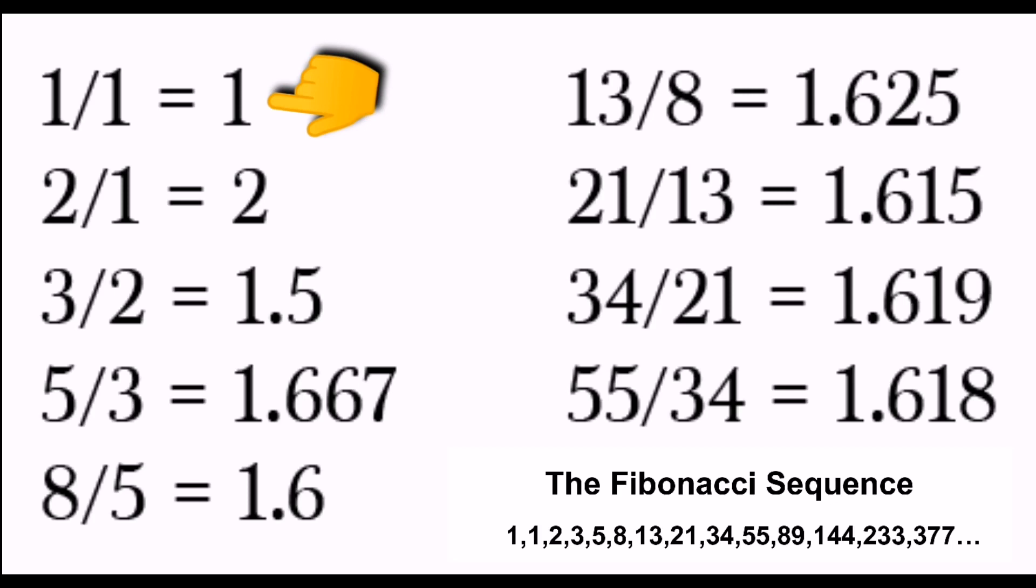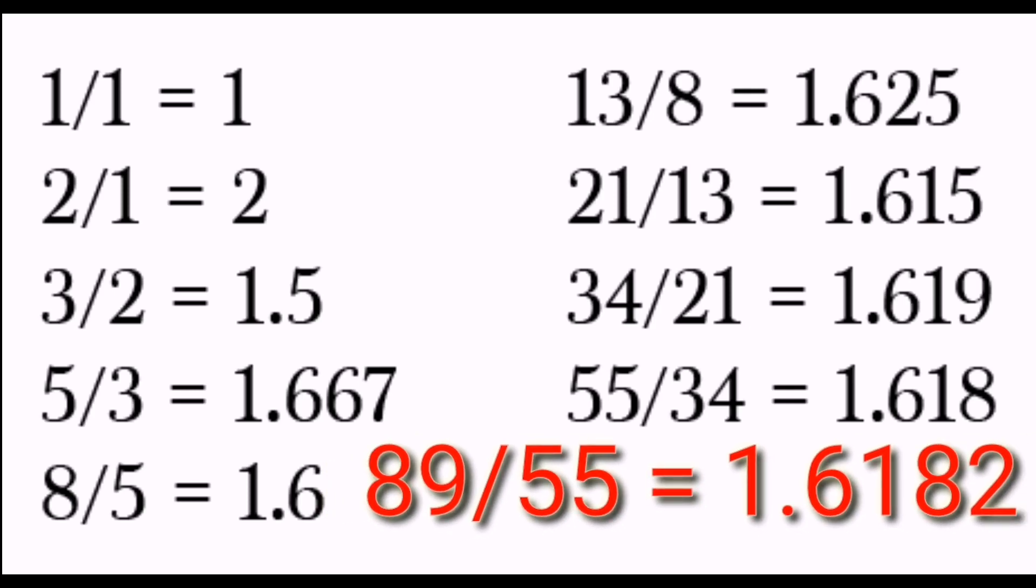For example, 1 divided by 1 is 1, 2 divided by 1 is 2, 3 divided by 2 is 1.5, 5 divided by 3 is 1.667, 8 divided by 5 is 1.6, 13 divided by 8 equals 1.625, 21 divided by 13 is 1.6154, 34 divided by 21 equals 1.619, 55 divided by 34 equals 1.6177, and 89 divided by 55 is 1.6182, and the rest of this one will be having the same quotient.